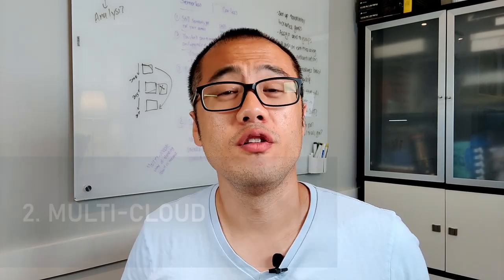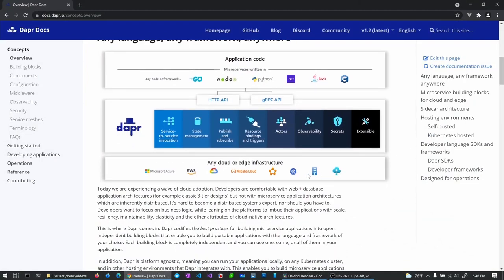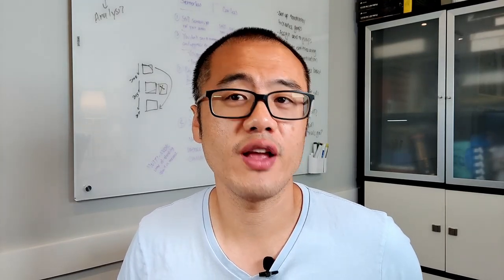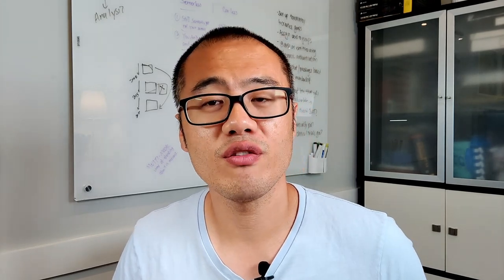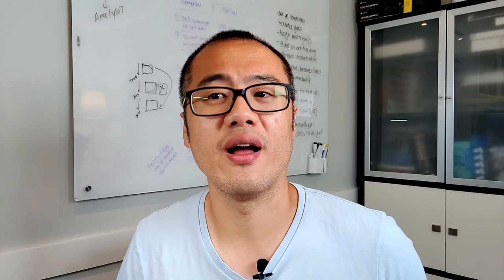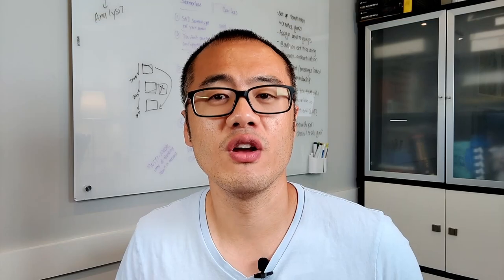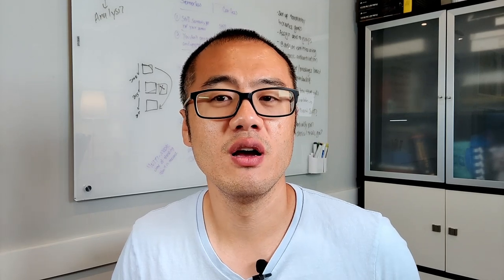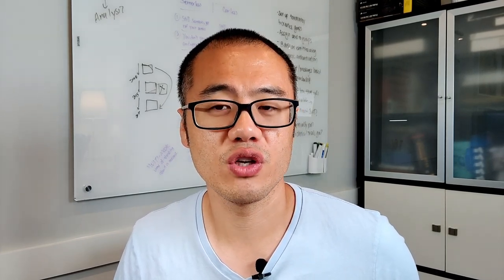Number two: multi-cloud. This is really an extension of portability, but having the option to run your solution in any cloud with minimal change might be a critical facet of your evaluation. For mission-critical systems, the ability to operate on multiple cloud providers could insulate against an outage in any single cloud provider. It can also be a competitive advantage, allowing you to deploy to a region where one provider has a data center but another does not. Multi-cloud is one of the areas where DAPR really shines because its pluggable component architecture means you can replace any of its building blocks — for example, swapping AWS DynamoDB for Azure Cosmos DB or a MySQL database — without changing your application code.